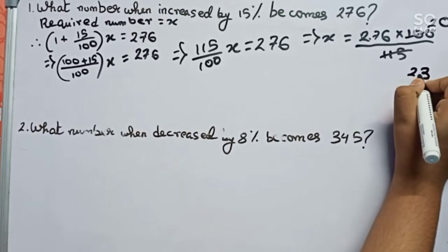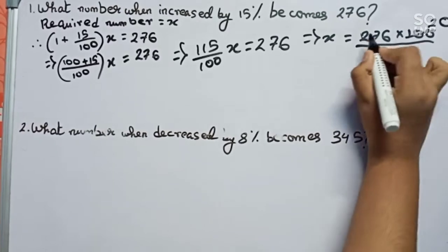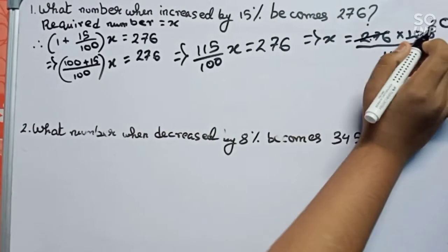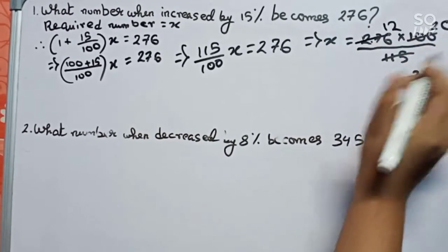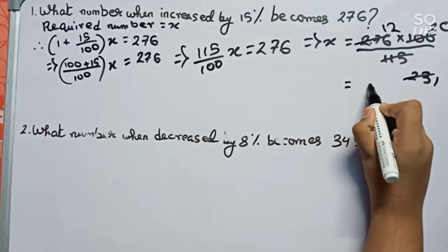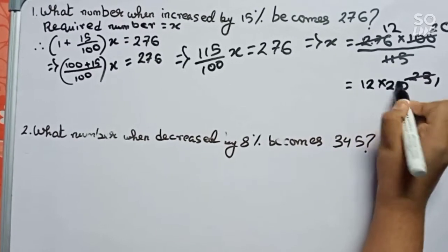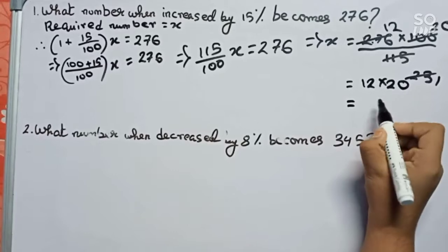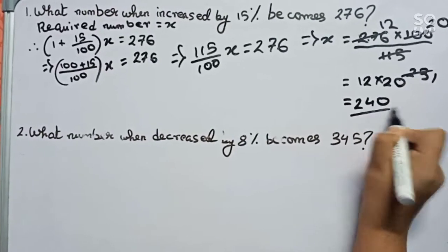23 and 276 directly become 1 and 12, so it becomes 12 into 20 which is 240. So this is our answer for question number one.